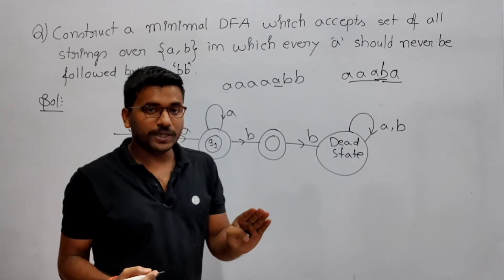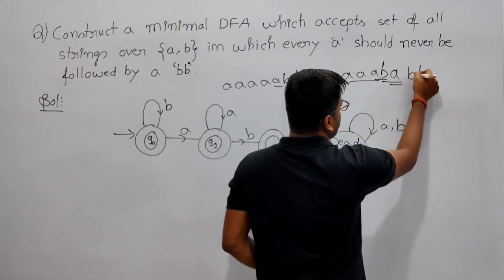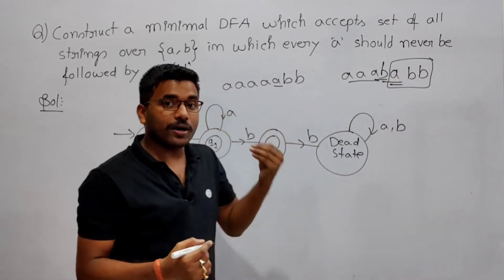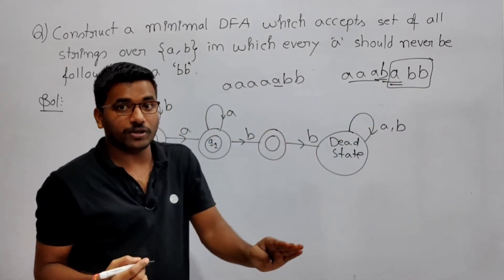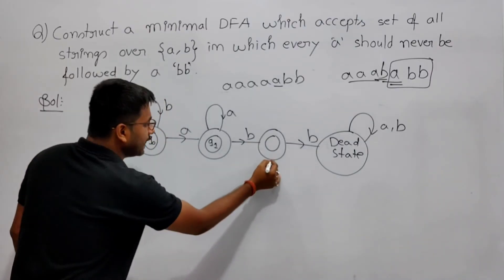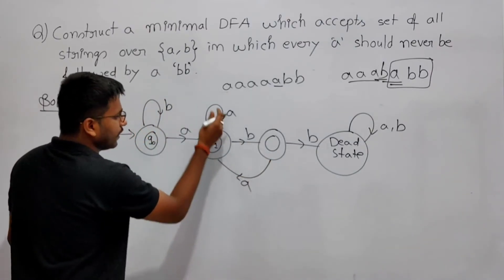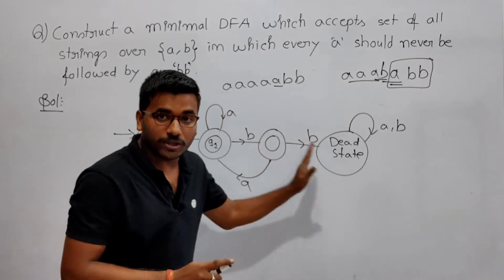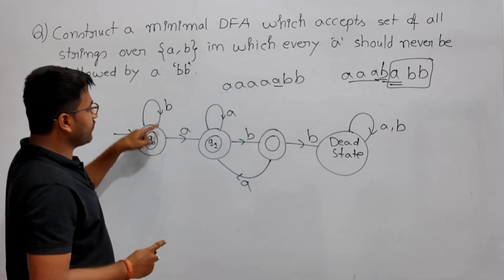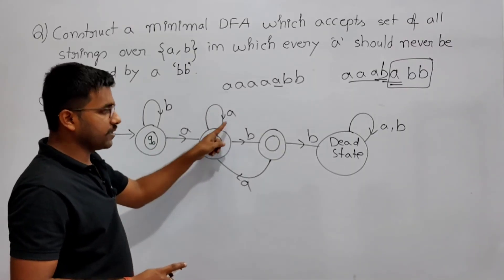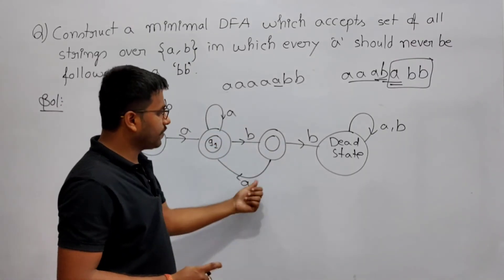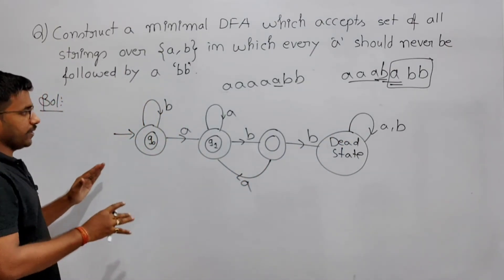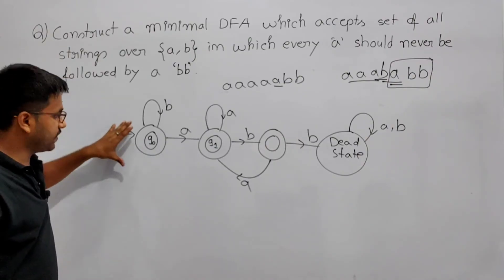After 'a' there should be two b's to reject — now the pattern is broken. After getting 'a' followed by two b's it should be rejected. So again you have to check: since I got one 'a', check whether it is again getting two b's or not. So from that state, if you are again getting 'a', come back to q1, because q1 only says you got at least one 'a' — check whether after this 'a' you are getting two b's or not. For every state I have given the transition of a and b. This is the minimal DFA.